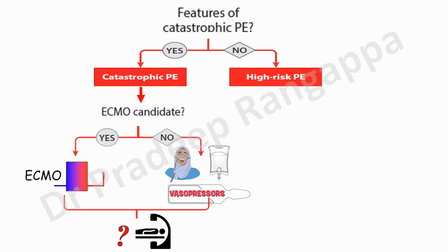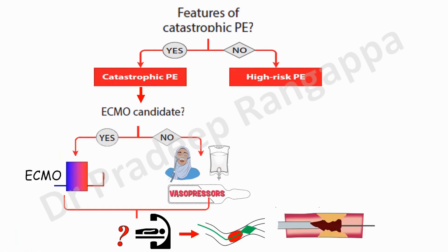After stabilization — even if not placed on ECMO — the algorithm focuses on invasive options: whether the patient is stable enough to go to the cath lab for catheter-directed thrombolysis, catheter-directed thrombectomy, or surgical embolectomy. These are the options suggested upfront for ongoing hemodynamic instability.